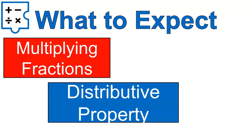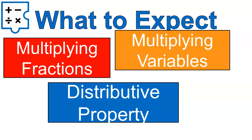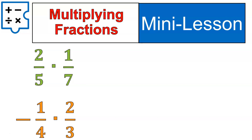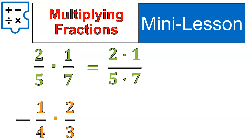We'll be multiplying fractions first, then we'll talk about multiplying variables, and then the distributive property. When multiplying fractions, you write numerator times numerator over denominator times denominator. For example, two-fifths times one-seventh: multiply two times one on top and five times seven on the bottom. By the end of this mini-lesson, we'll be doing it directly without writing out that middle step. That's what multiplying fractions looks like — a necessary skill for what we're doing moving forward.